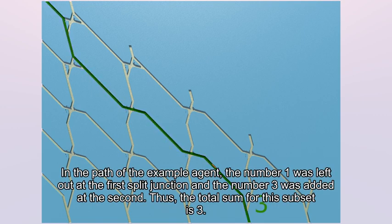In the path of the example agent, the number 1 was left out at the first split junction, and the number 3 was added at the second. Thus, the total sum for this subset is 3.